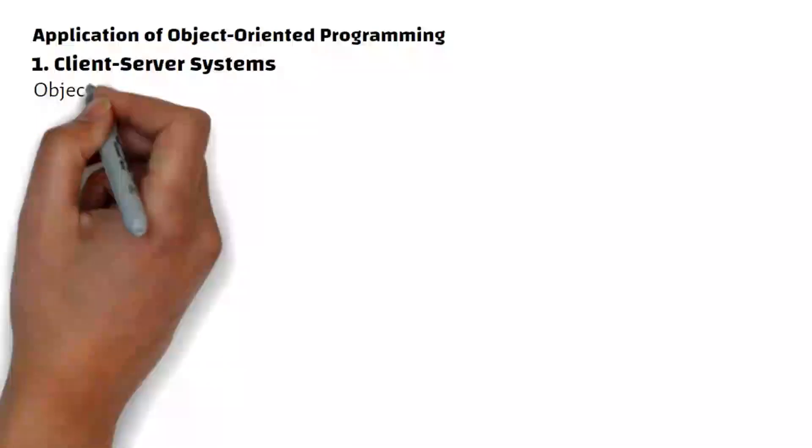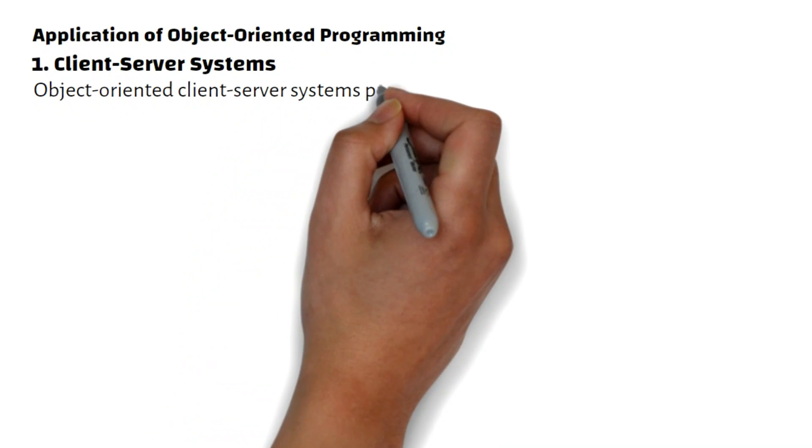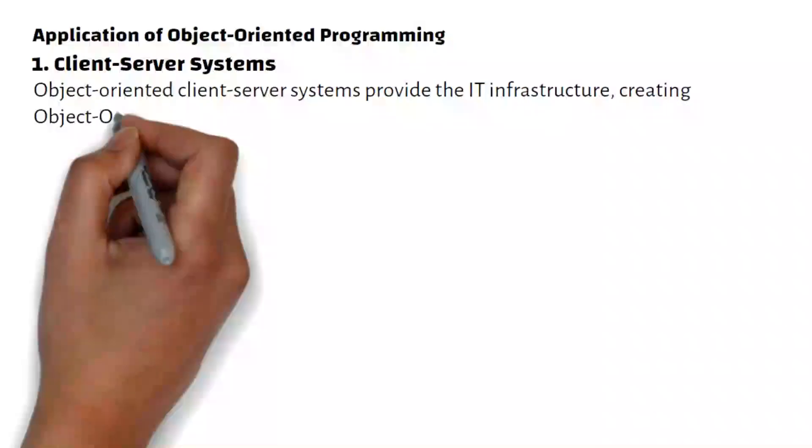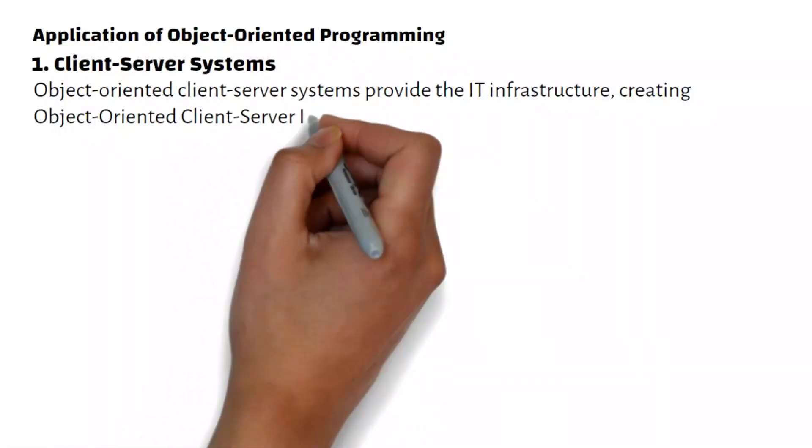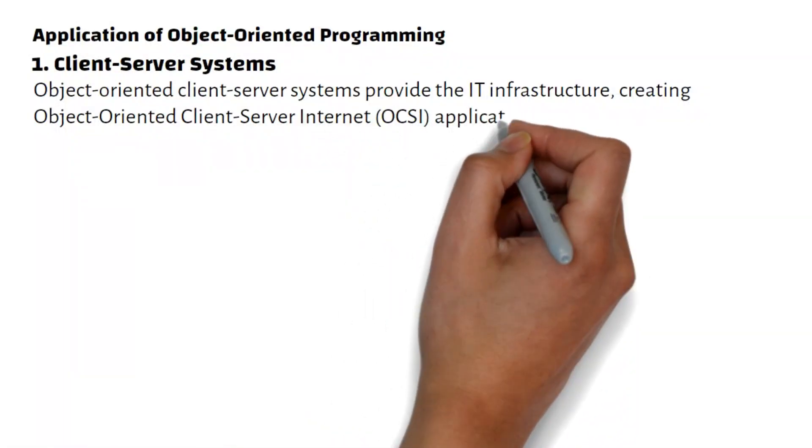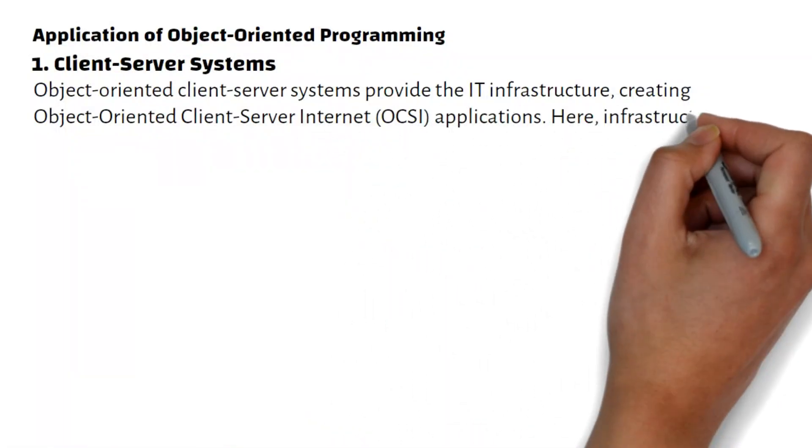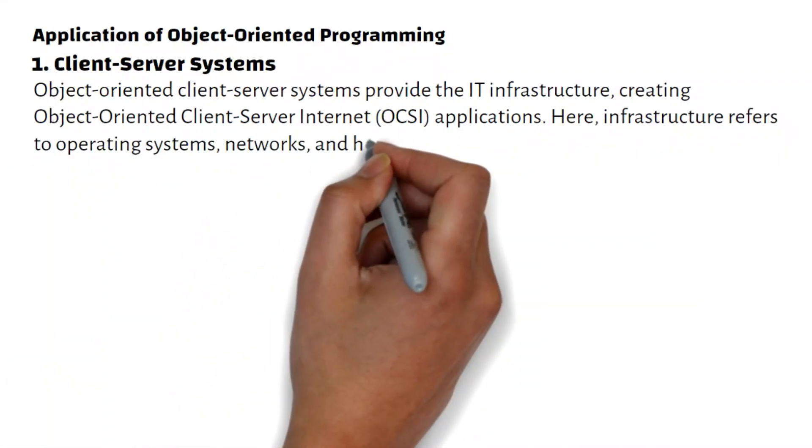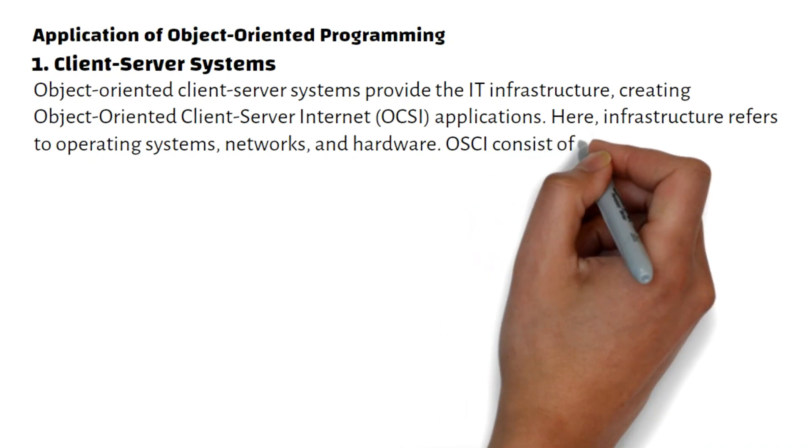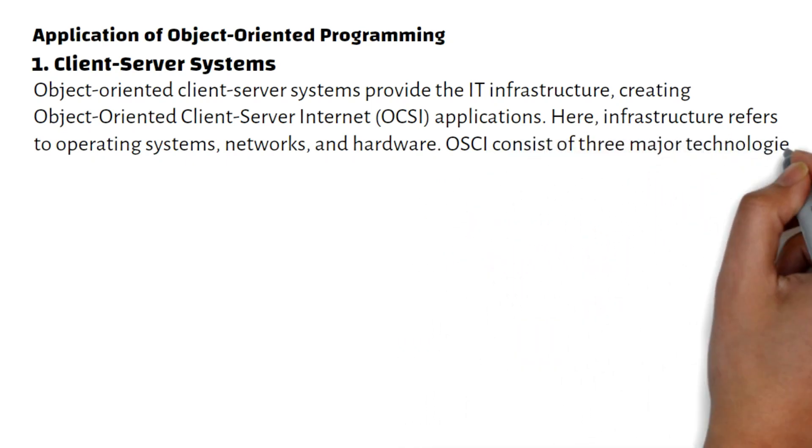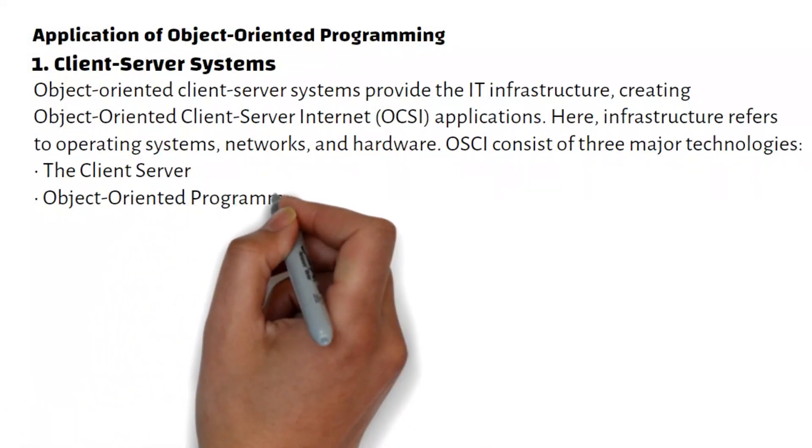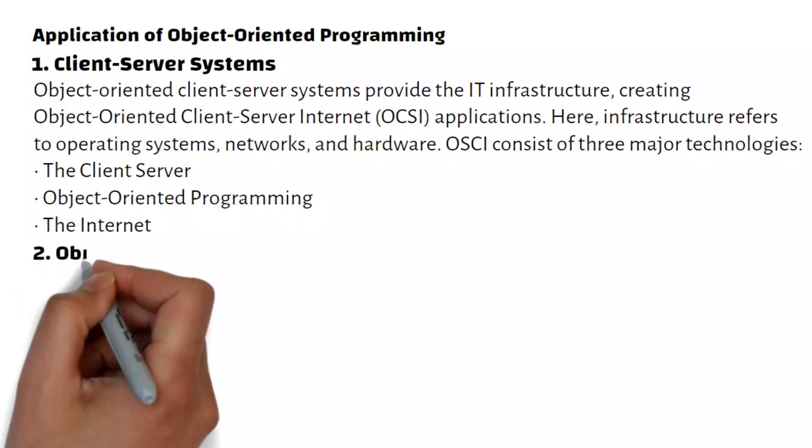Client-Server Systems: Object-Oriented Client-Server Systems provide the IT infrastructure, creating object-oriented client-server Internet (OCSI) applications. Here, infrastructure refers to operating systems, networks, and hardware. OCSI consists of three major technologies: the client-server, object-oriented programming, and the Internet.